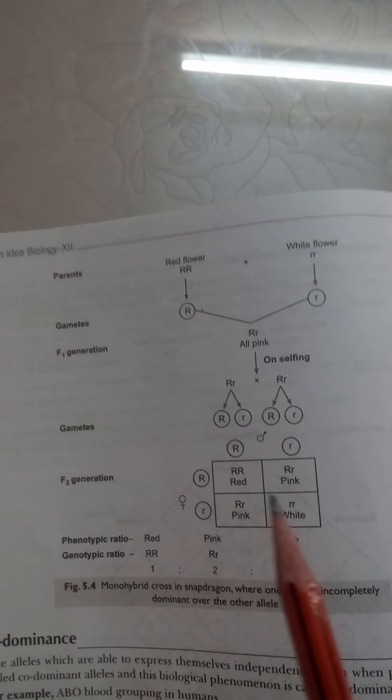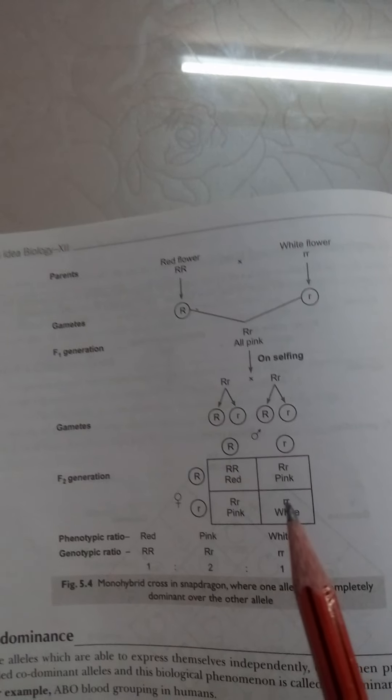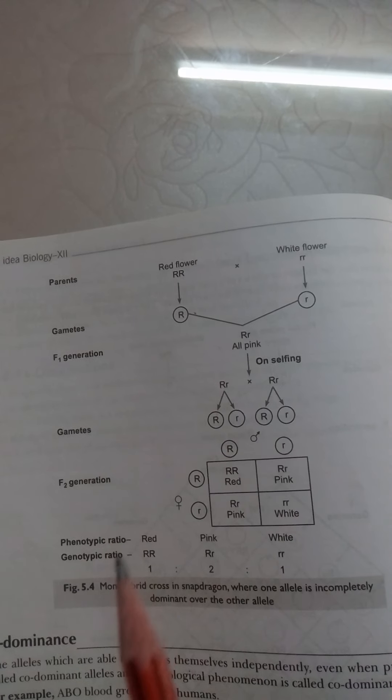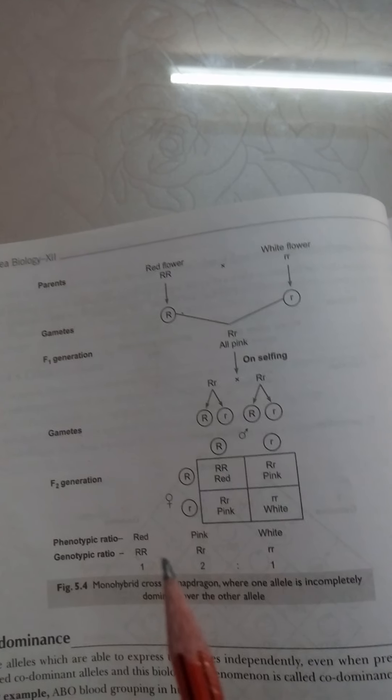One pure red, two heterozygous, one recessive. So one is to two is to one, which means both genotypic and phenotypic ratio is the same in incomplete dominance.